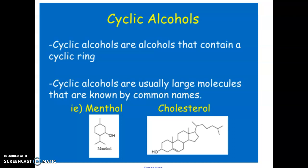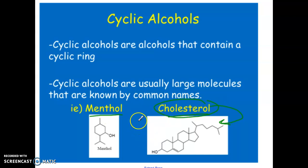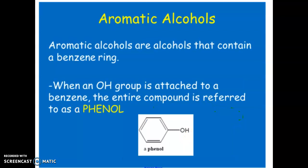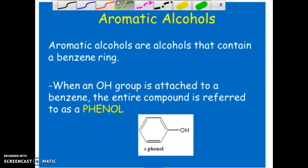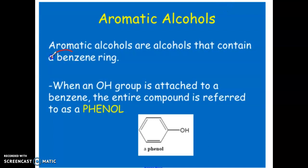Cyclic alcohols are fused ring structures that have an OH group on them. Many of these are large molecules that go by common names rather than IUPAC names — for example, cholesterol. I'm not going to ask you to draw cholesterol; we're always dealing with IUPAC. It's just good to know these types of cyclo groups with OH groups exist, some of which can be very large.